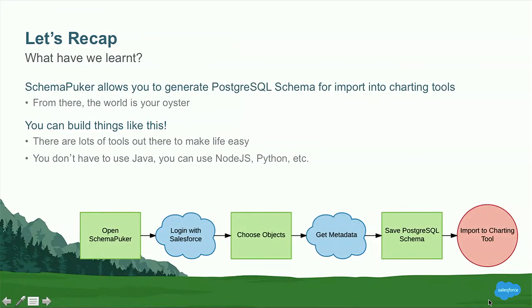So let's recap. SchemaPuker allows you to generate PostgreSQL schema from your Salesforce data model. From there, you can import it into Lucidchart, ERWin, Visio, and so on. You could also import it into a Postgres database if you wanted to build a copy of your Salesforce data model — however, this is not why I've built the tool and it's untested, but if you try it, I'd love to hear about it. Once you've got your diagram in Lucidchart or Visio or whatever you'd like to use, the world is your oyster — you can include it in Google Docs, export it, and so on. It makes generating entity relationship diagrams incredibly easy.